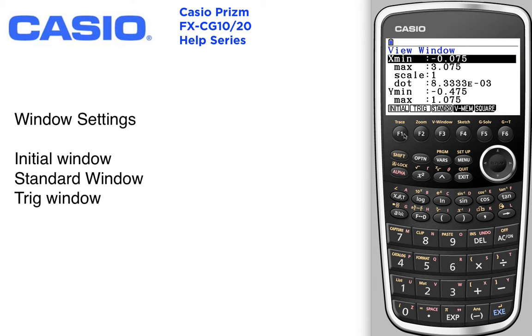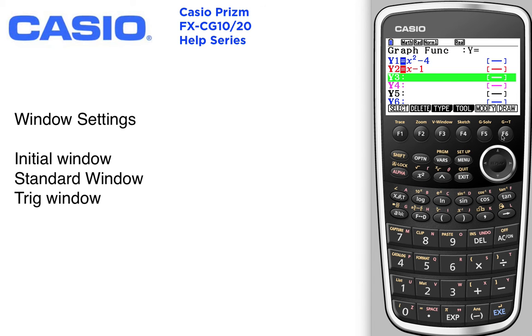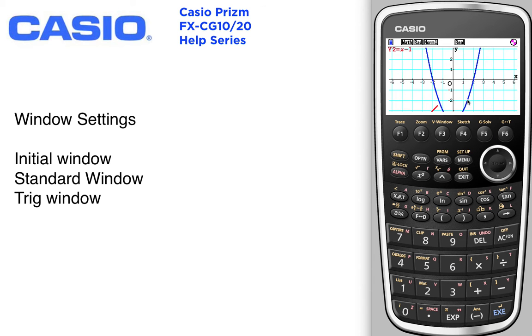There are some preset windows. The initial window will keep things looking the way they should. There's no distortion — this goes according to the proportions of the screen. So when you graph, your graphs will not look distorted.